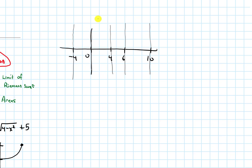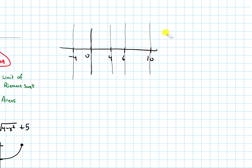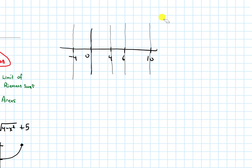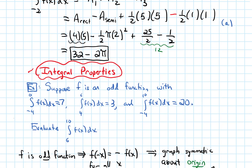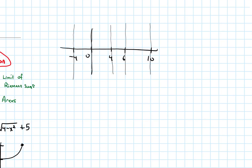I don't know exactly what the graph of my function looks like, but I know it's supposed to be an odd function — symmetric about the origin. So I'm not going to try to draw a graph; instead I'll just use the information given in the integrals. We know the integral from negative 4 to 0 is 7, so I'll label that in the picture: from negative 4 to 0, this area should be 7. The integral from 0 to 4 wasn't given to us, but I can figure it out.